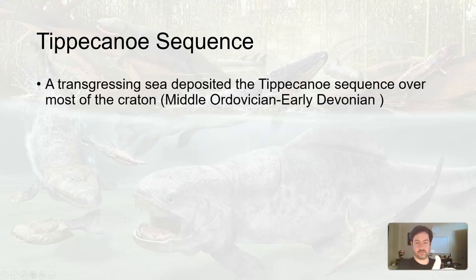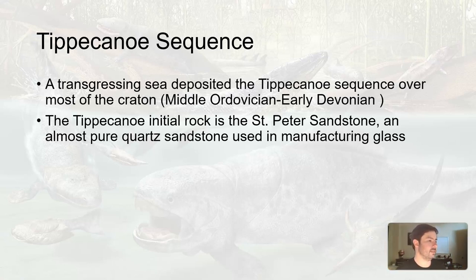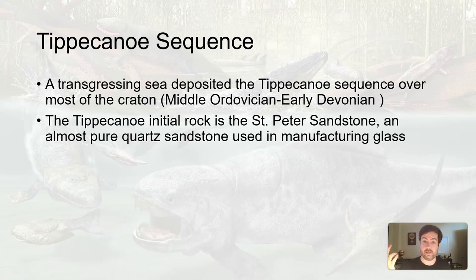We have this transgressive-regressive Tippecanoe sequence. The initial sediment that would eventually become the first rock of the Tippecanoe sequence is the St. Peter Sandstone, which is an almost pure quartz sandstone actually used now in manufacturing glass. Glass is made out of sand — they melt sand and do other stuff to it. That's how glass for your windows is made.